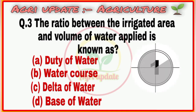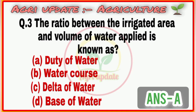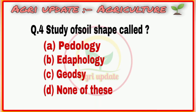Question number 4: The study of soil shape is called. First option is Pedology, second option is Ideology, third option is Geodesy, and fourth option is None of these.